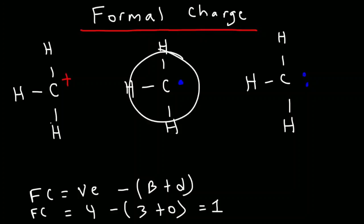Now moving on to the next one, it's going to be four valence electrons minus three bonds and one dot. So we got three bonds, one dot. That's four minus four. So that's zero. So this one is neutral. It doesn't have a charge.